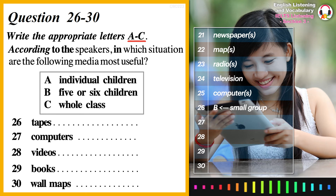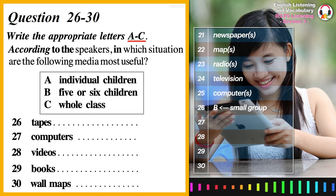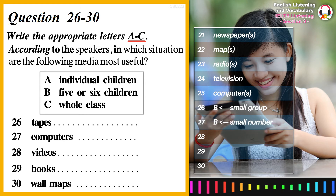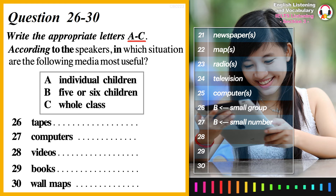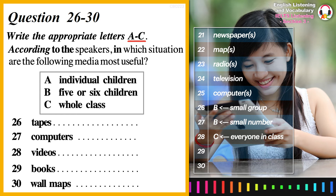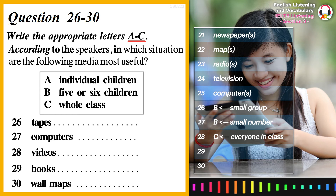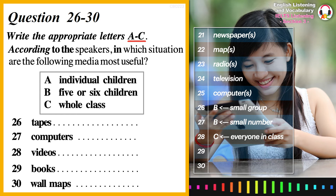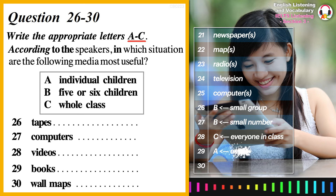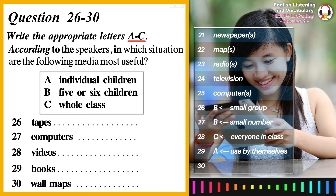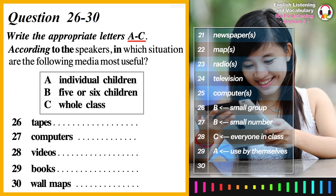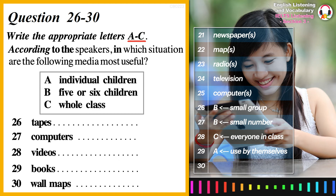Computers are the same — I think they're better with small numbers of children, and they're hardly ever useful with a whole class. Videos, however, are ideal for use with everyone present in the class, especially when children have individual activity sheets to help them focus their minds on what's in the video. And what about books? Books are ideal for children to use by themselves. I know they're used with groups in schools, but I wouldn't recommend it. Other pictorial media, like maps, though, are different — I'd always plan group work around those.